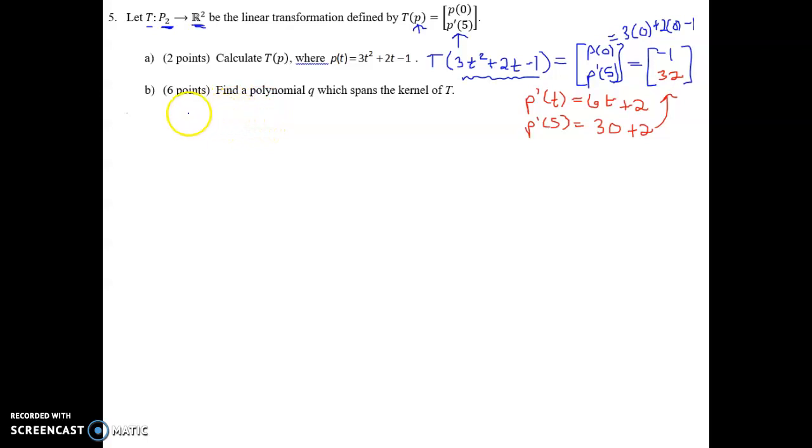Find polynomial Q which spans the kernel of T. So the kernel of a transformation, just generally speaking, is the collection of all vectors in the domain such that when you do T of that vector, it's mapped to the 0 vector. This is what the kernel is. It's the collection of all vectors that are mapped to the 0 vector by the transformation T.